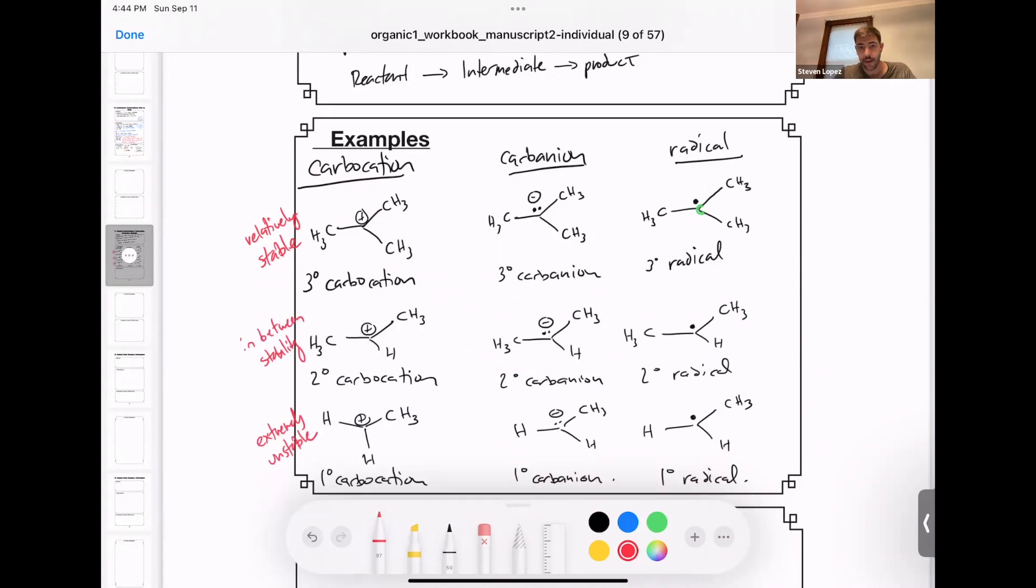Carbanions are exactly the opposite. Tertiary carbanions are very unstable, while primary carbanions are relatively stable. Secondary is in between.